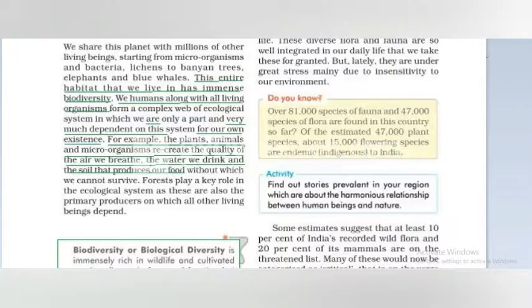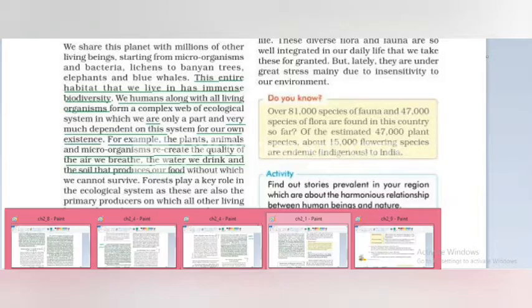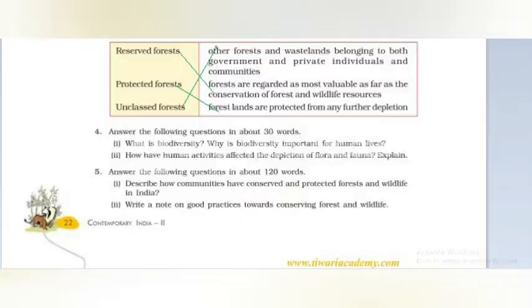We humans, along with all living organisms, are very much dependent on biodiversity for our own existence. We need water, food, and air. Biodiversity is very important. The next question: how have human activities affected the depletion of flora and fauna? Explain.